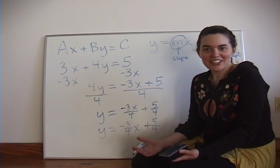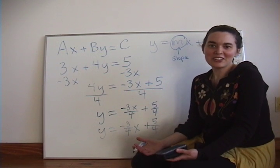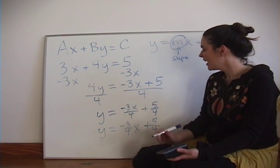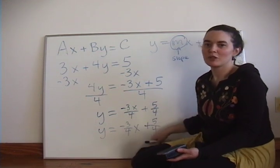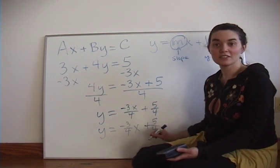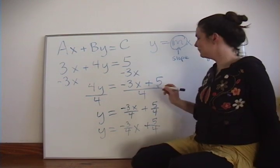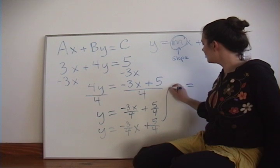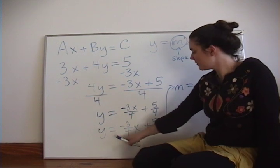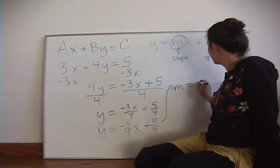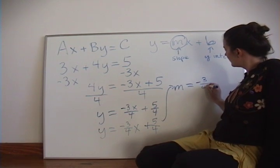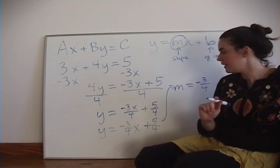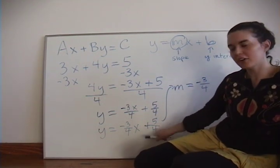So we just converted it from standard form to slope-intercept form. And just looking at slope-intercept form, you can see that the slope, also known as M, equals negative 3 fourths. And the y-intercept is 5 fourths.